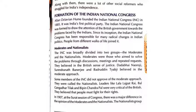This Congress was divided into two groups, because the people who had come together had slightly different mentalities. One group is different from the other. That is why the Indian National Congress was divided into two groups. One group's name is the Moderates and the other group's name is the Nationalists, also called Extremists. We will discuss this in the next video.